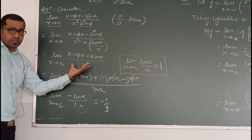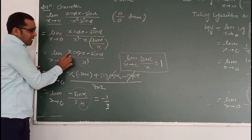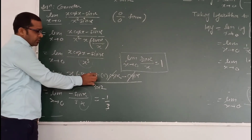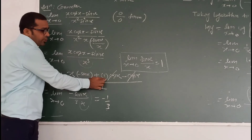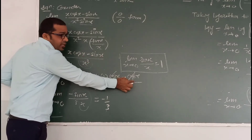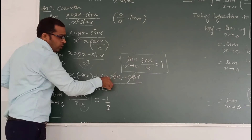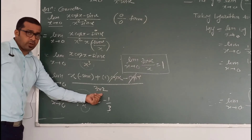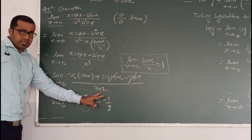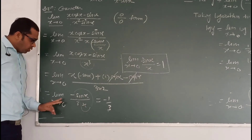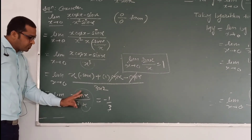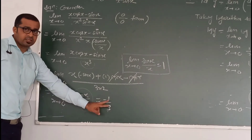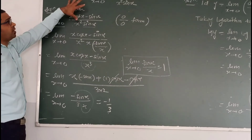After getting sinx/x = 1, we apply L'Hospital's rule to the remaining expression. Differentiating the numerator: the derivative of x·cosx is cosx minus x·sinx by the product rule, minus the derivative of sinx which is cosx. The cosx terms cancel, leaving x minus sinx... wait — we get x·(-sinx) plus cosx minus cosx, leaving -x·sinx. The denominator derivative of x³ is 3x². Simplifying, sinx/x remains, and with limit x→0 that equals 1. So the result is -1/3.